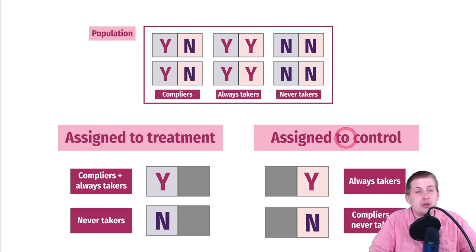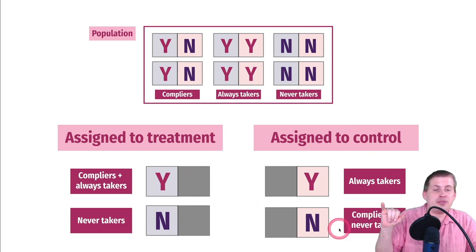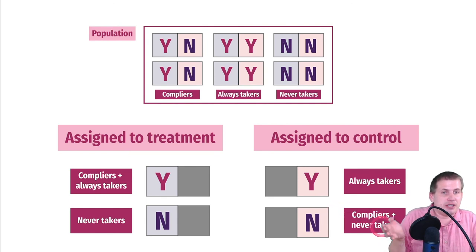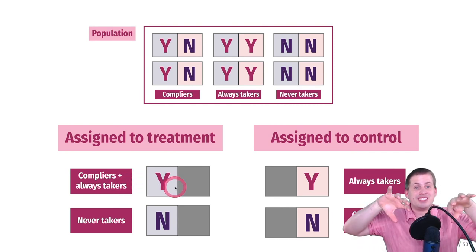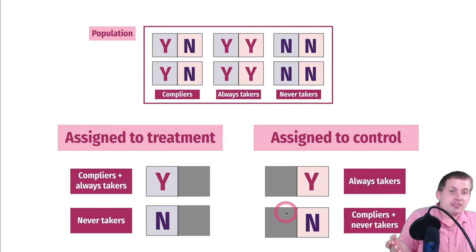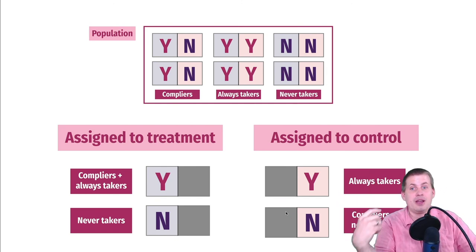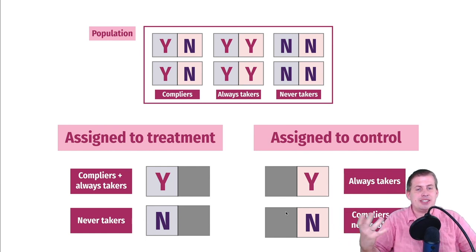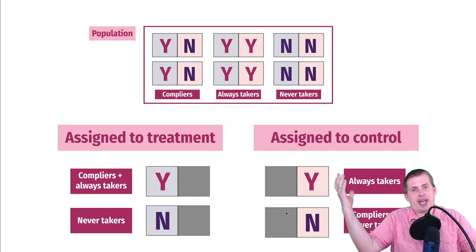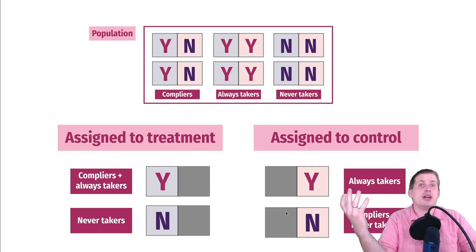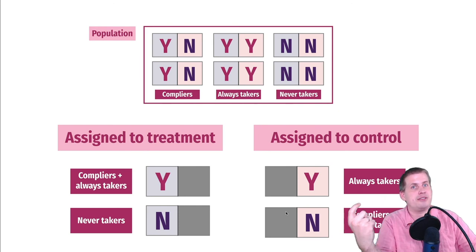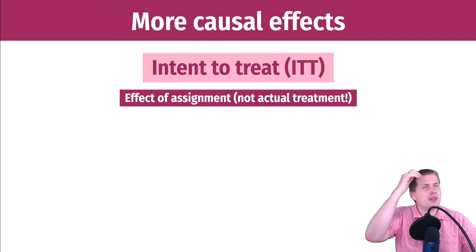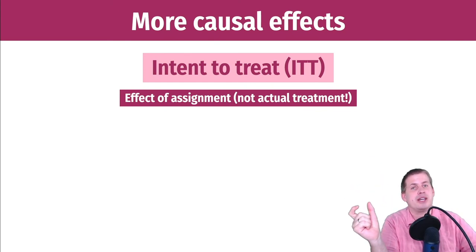We want to focus on just the compliers, but the tricky part is they're always tangled with another group. If we could disentangle them and remove always takers from compliers and never takers from compliers, we'd know the effect of the program on compliers. If you just calculate average of people in treatment minus average in control, you get a causal effect but it includes always takers and never takers too.